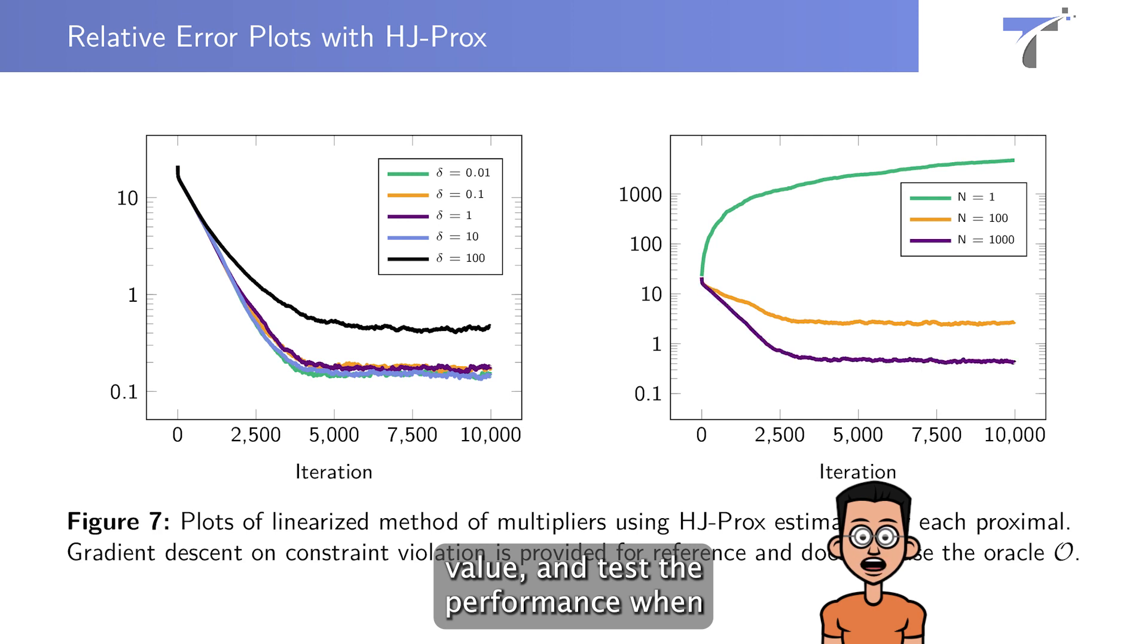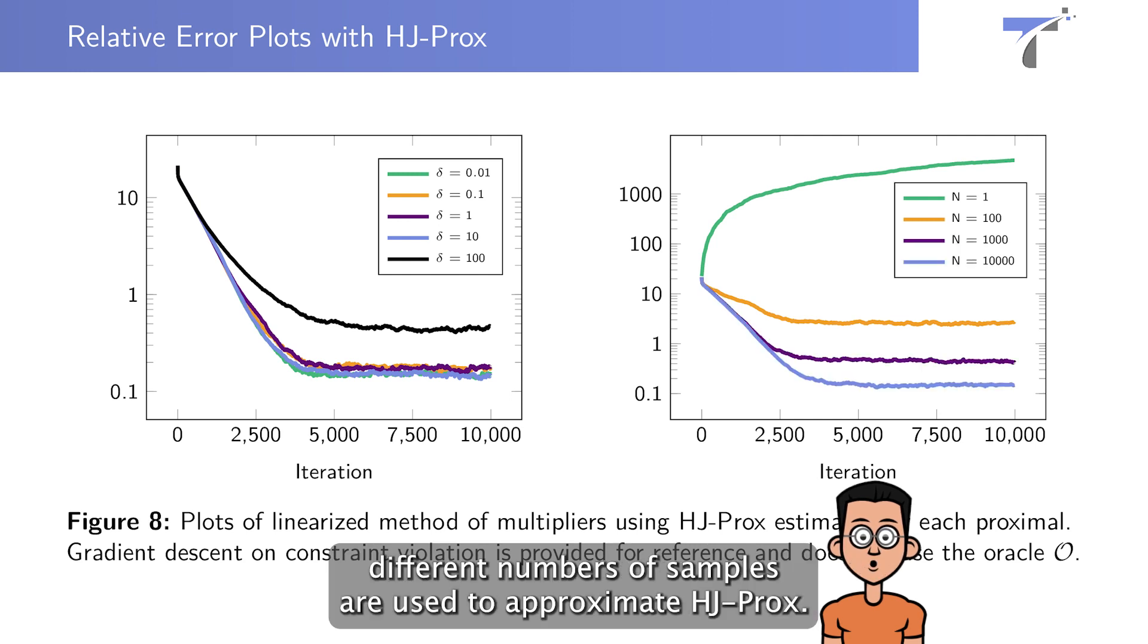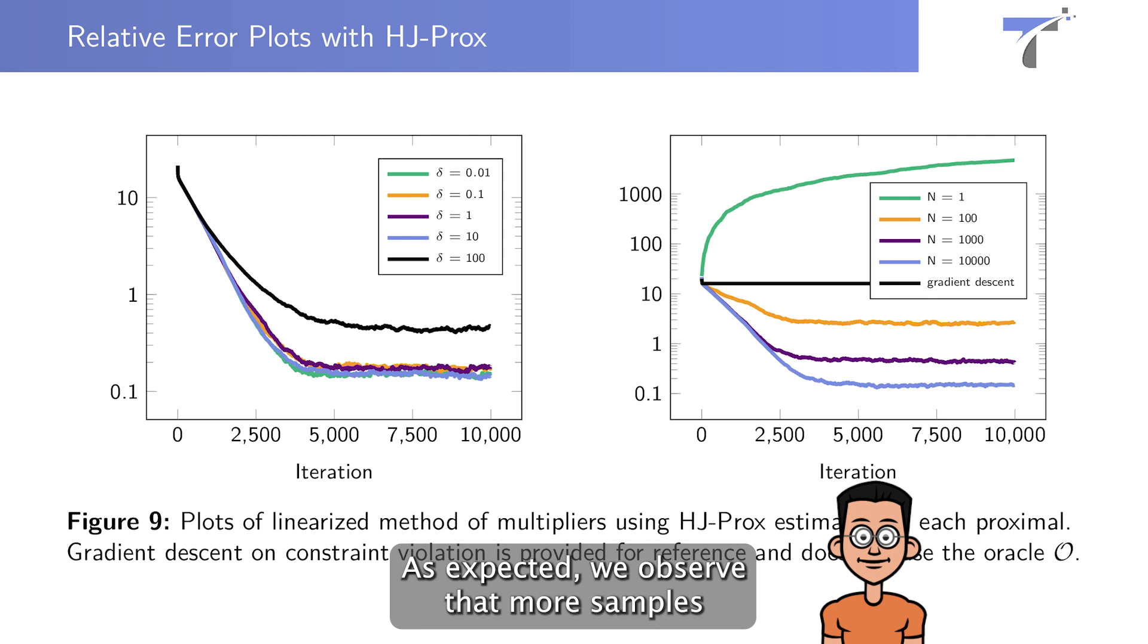On the right figure, we fix the smoothing value and test the performance when different number of samples are used to approximate HJ-Prox. As expected, we observe that more samples lead to more accurate solutions.